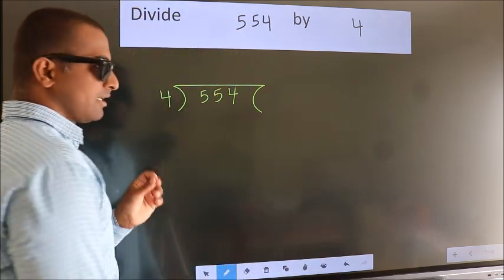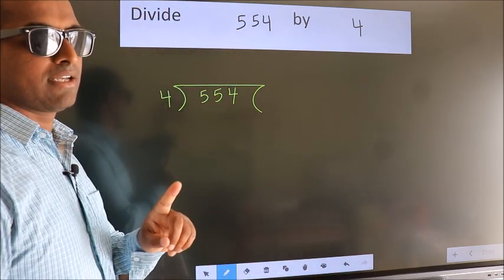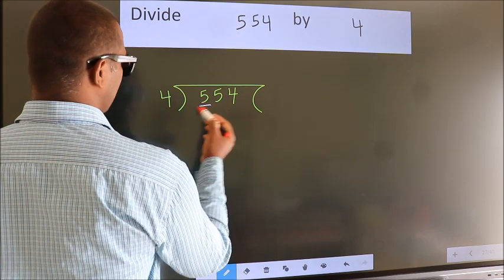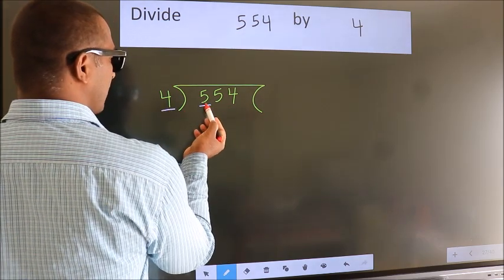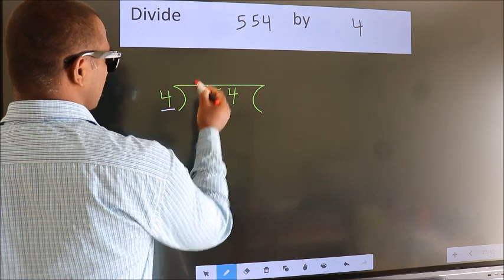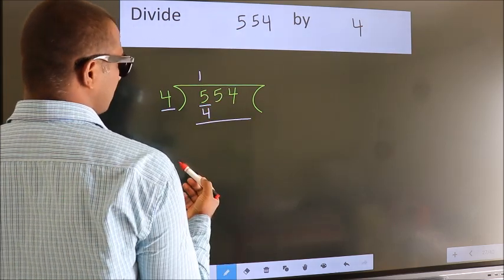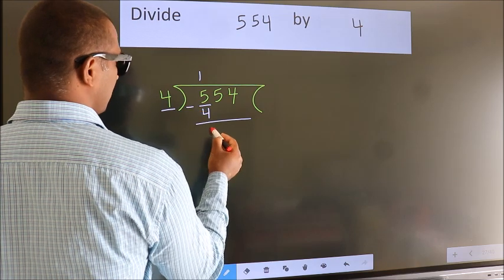This is your step 1. Next, here we have 5, here 4. A number close to 5 in the 4 table is 4 once, which is 4. Now we should subtract. We get 1.